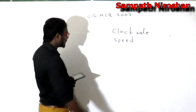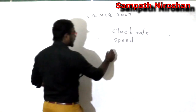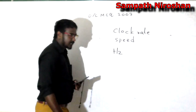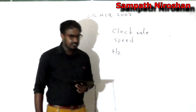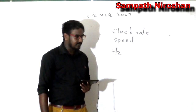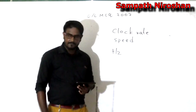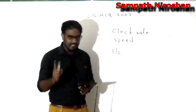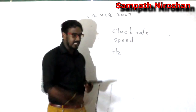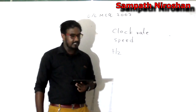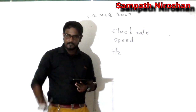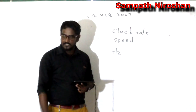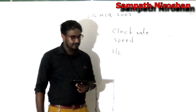There is a definition for Hertz. Hertz means if the computer is capable of doing one instruction within a second, we say one Hertz. If the computer is capable of doing 10 instructions within a second, we say 10 Hertz. If the computer is capable of doing 1000 instructions within a second, we say 1000 Hertz.